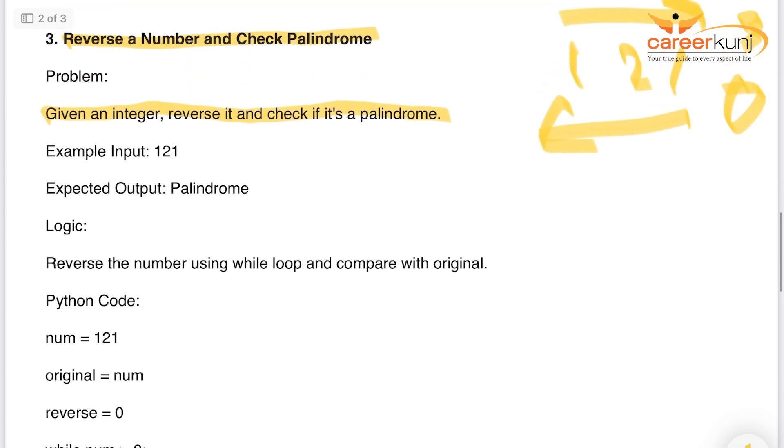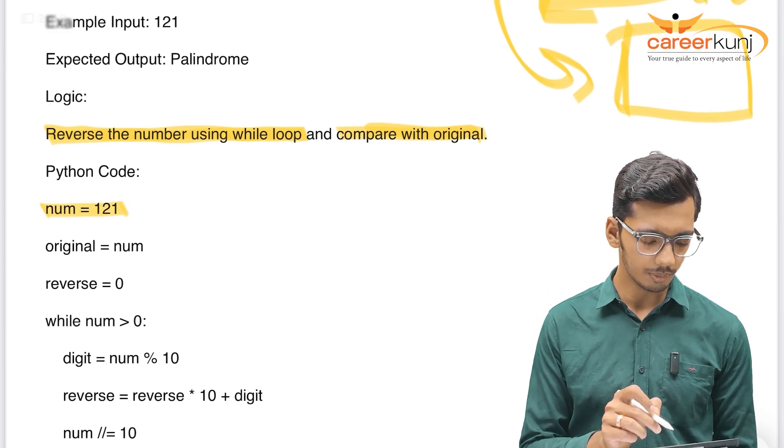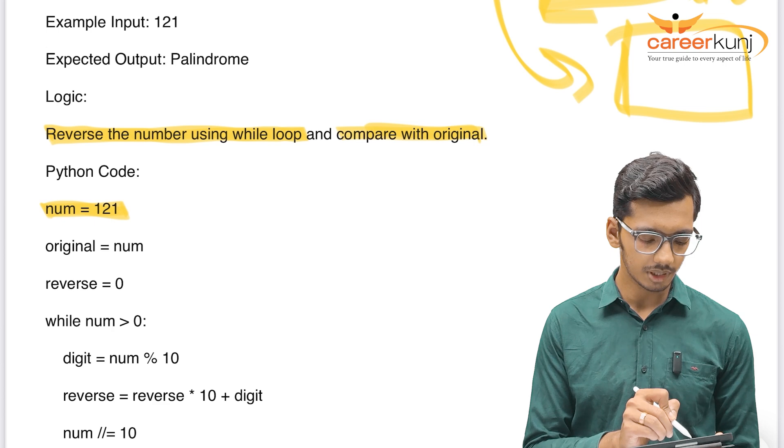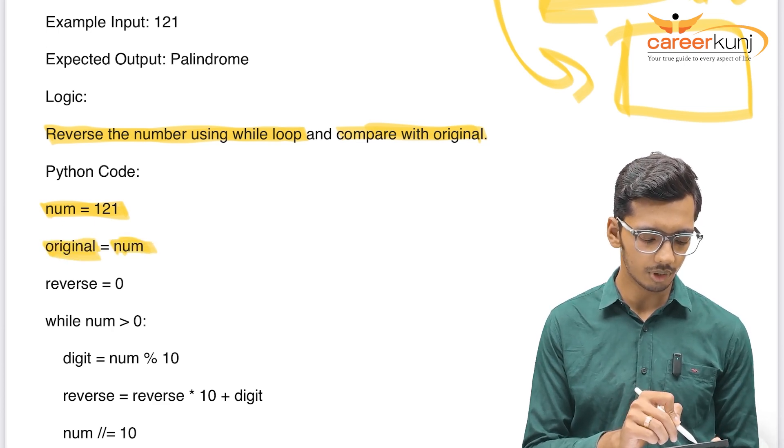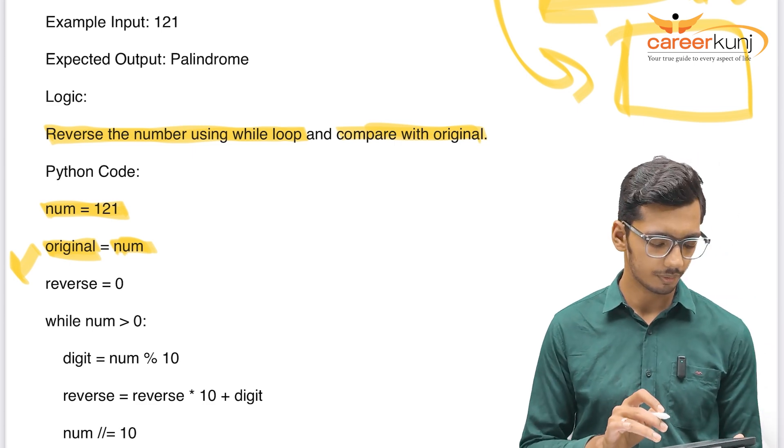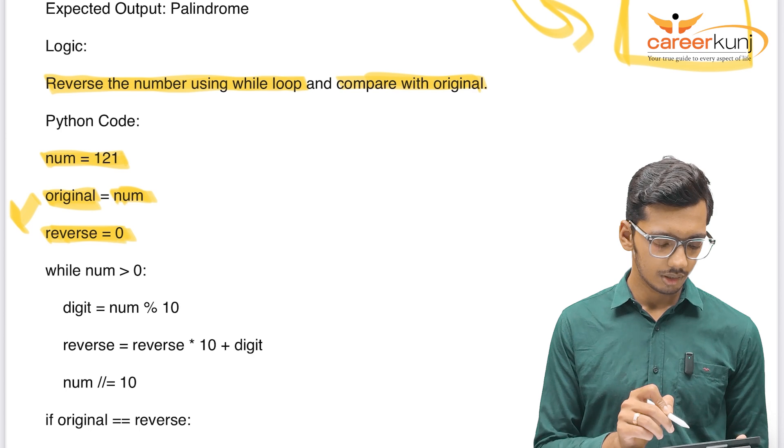First, what we will do, we will reverse the number using while loop. And then we will compare it with the original. That means I will have one number. I will reverse it store in another variable and we will compare these both numbers. In case the statement goes true, it will print it as a palindrome number. Only for example, I am taking number as 121. Here it can be any input number. And this is the second variable which I will be comparing it. Original equal to num. Original is nothing but my original number to which I will be comparing my final output.